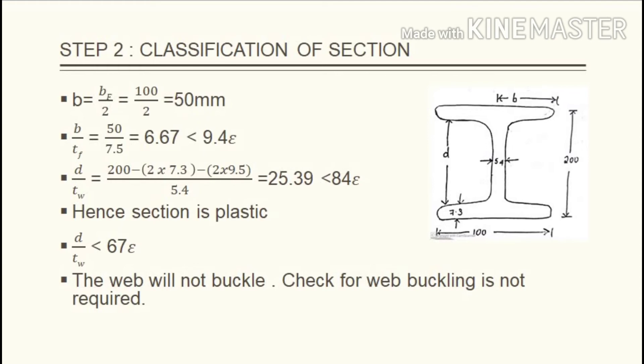Next is calculation of shear capacity. V is less than Vd, shear force is less than design shear force. Vd equals Vn by gamma M0. Here Vn equals Vp, which equals Av Fy by root 3 gamma M0. Av is the shear area for hot rolled, which is height into total depth of the section multiplied by thickness of web 7.3. Therefore substituting in the equation we get 200 times 7.3 times 250 divided by root 3 times 1.1, which equals 191.601 kilonewton. As V is equal to 30, V is less than Vd.